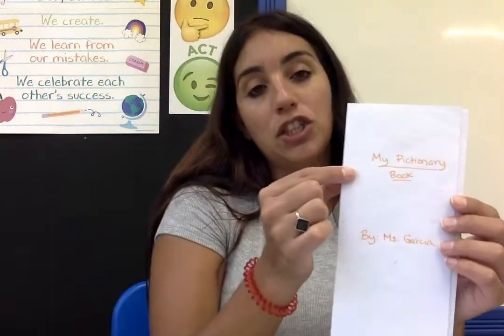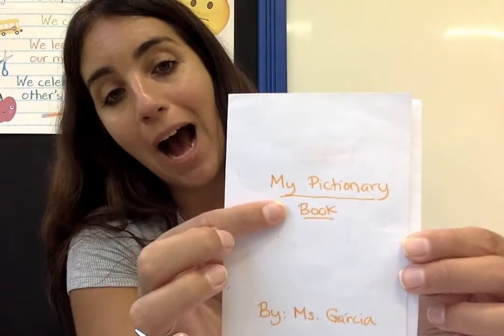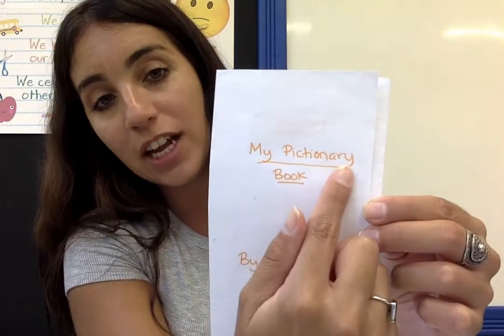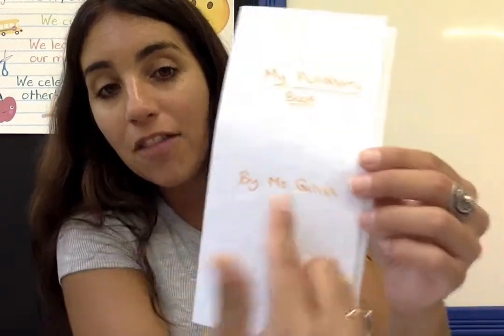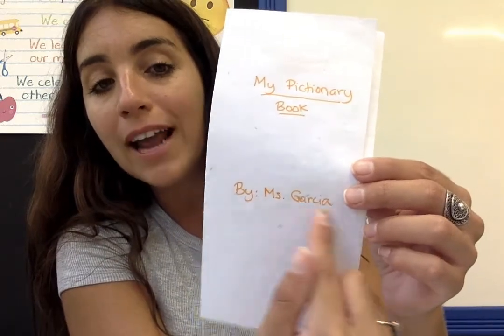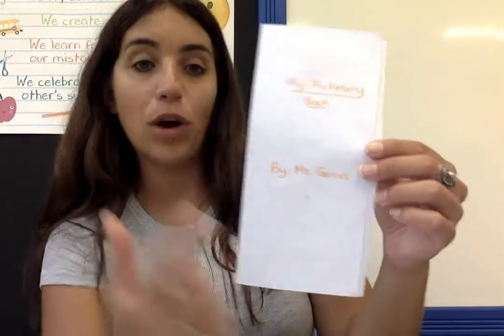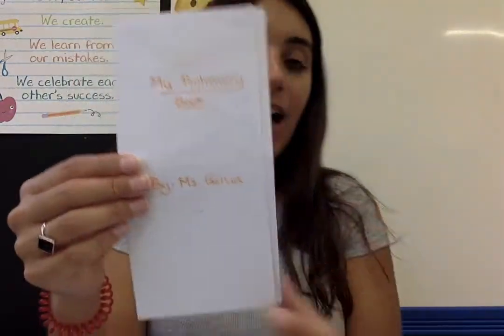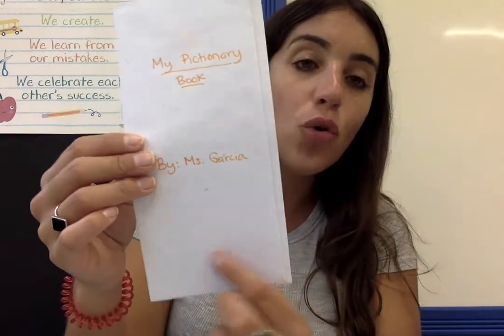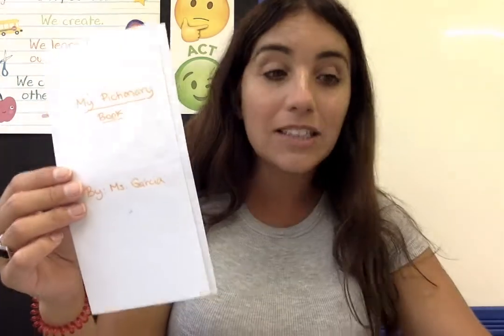And then you are going to make your own Pictionary. The title of your Pictionary book should be: My Pictionary Book by... and then you are going to put your name here. And down here, you are going to write the title of your book, which is Making Pizza.